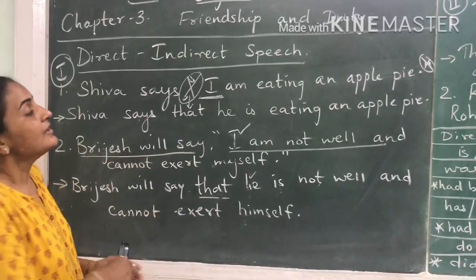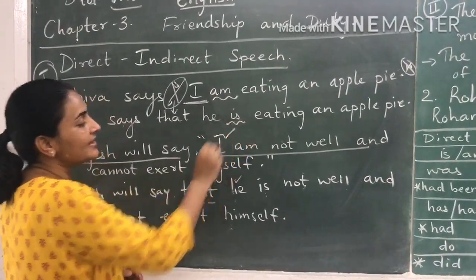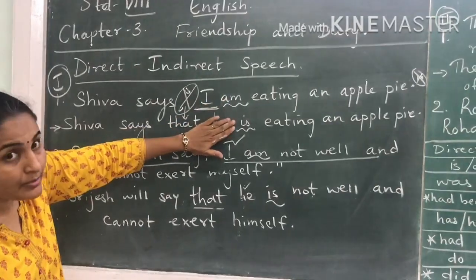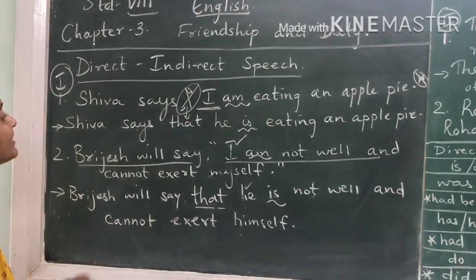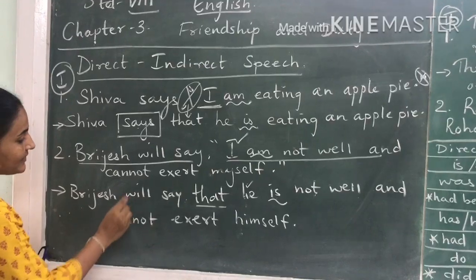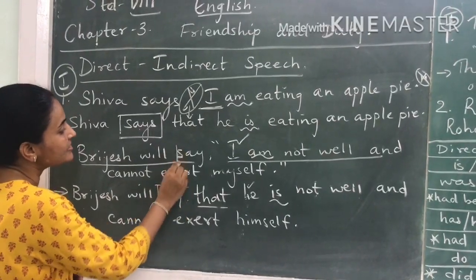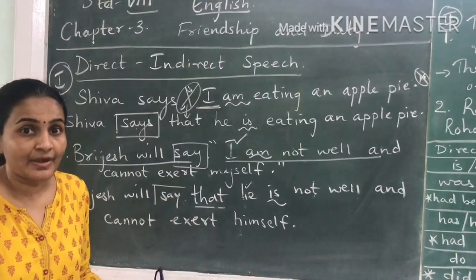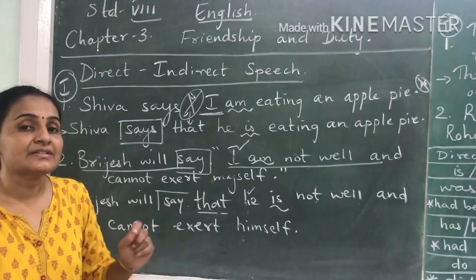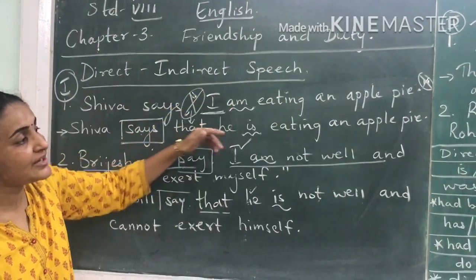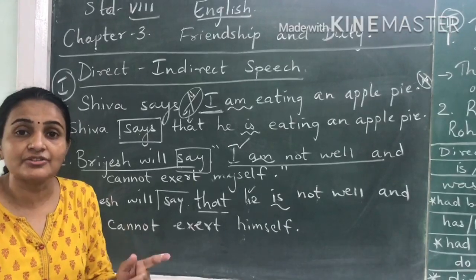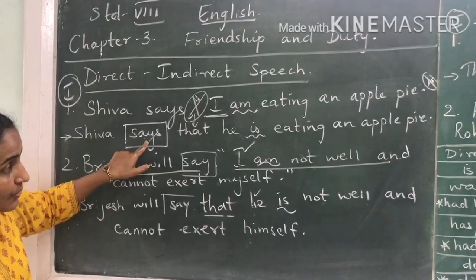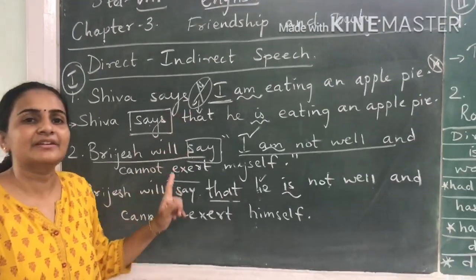Now over here, this is present tense and in the indirect speech also we made it present tense. Why? Because this word is 'says'. When this word is 'says', you have to keep the sentence in present tense only. But not always — when you change a direct sentence to indirect, you have to change the verbs to past tense. But where it is 'says', you will keep present tense as present.